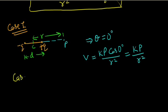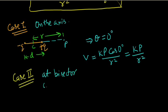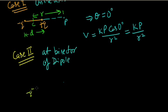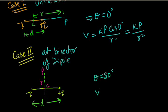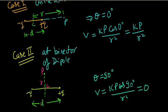Case 2: at the bisector of the dipole. Here we have a dipole minus Q plus Q, and point P is at the bisector, at r distance from center C. In this case, theta equals 90 degrees, so the potential V equals kp cos 90 upon r squared, and this equals 0. So at the bisector of the dipole passing through the center, the electric potential is zero.